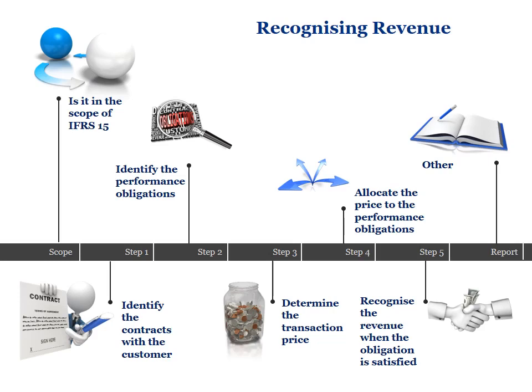Should you identify multiple performance obligations in step 2, the amount determined in step 3 needs to be allocated to those performance obligations relative to their standalone selling prices. There is only a single means of allocation allowed in terms of IFRS 15. Only in step 5 do we then determine when to recognize revenue. Revenue is recognized when control of the performance obligation is transferred to the customer. Three criteria in the standard are considered first to determine whether revenue is recognized over time; only if none are satisfied is revenue recognized at a point in time.